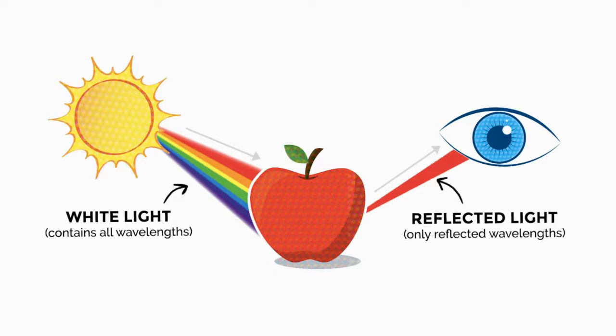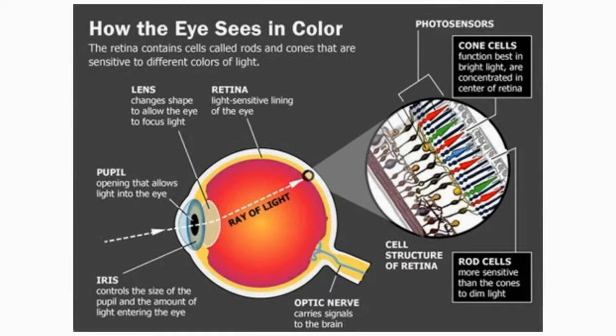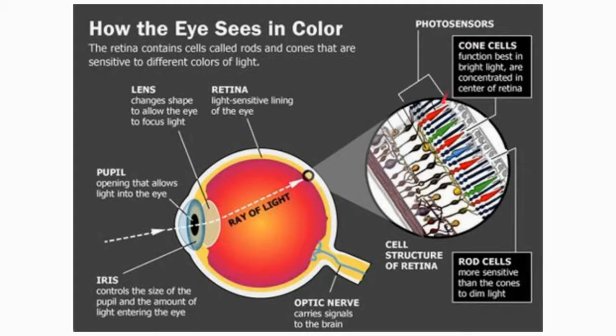That red wavelength of light is then reflected off of the apple into our eyes. That wavelength of light then enters our eye through the pupil, traveling through the lens into the back of the eye to a portion known as the retina. The retina is the light-sensitive lining of the eye. Within the retina, the cell structure contains two separate cells known as rods and cones. Cones are the photosensors in the eye responsible for how we see light and how we see color.